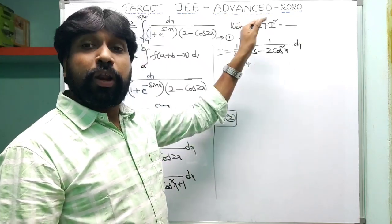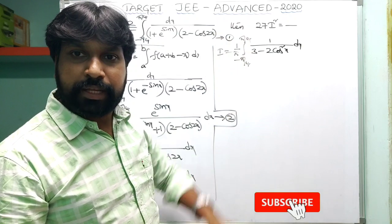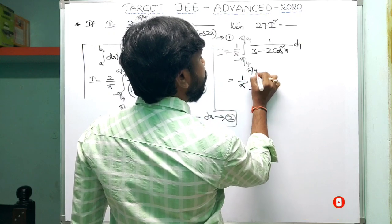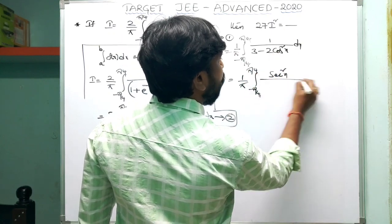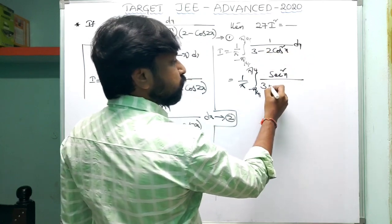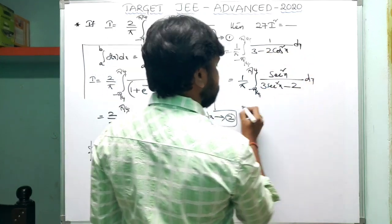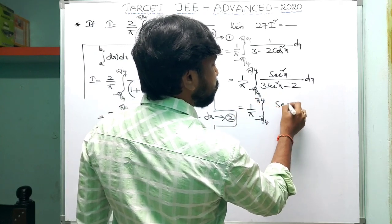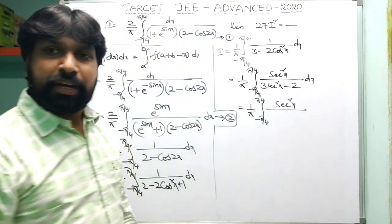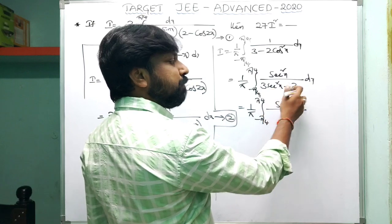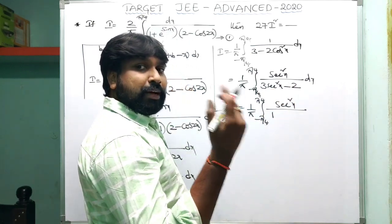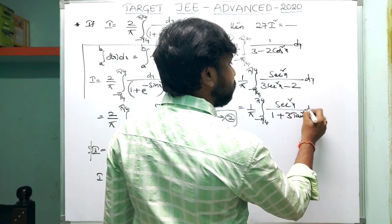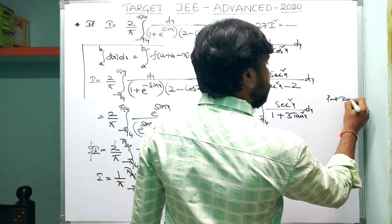So I = (1/π) × integral from −π/4 to π/4 of 1/(3 − 2cos²x) dx. Divide numerator and denominator by cos²x: this gives sec²x / (3sec²x − 2) dx. Since sec²x = 1 + tan²x, the denominator becomes 3(1 + tan²x) − 2 = 1 + 3tan²x. So I = (1/π) × integral from −π/4 to π/4 of sec²x / (1 + 3tan²x) dx.